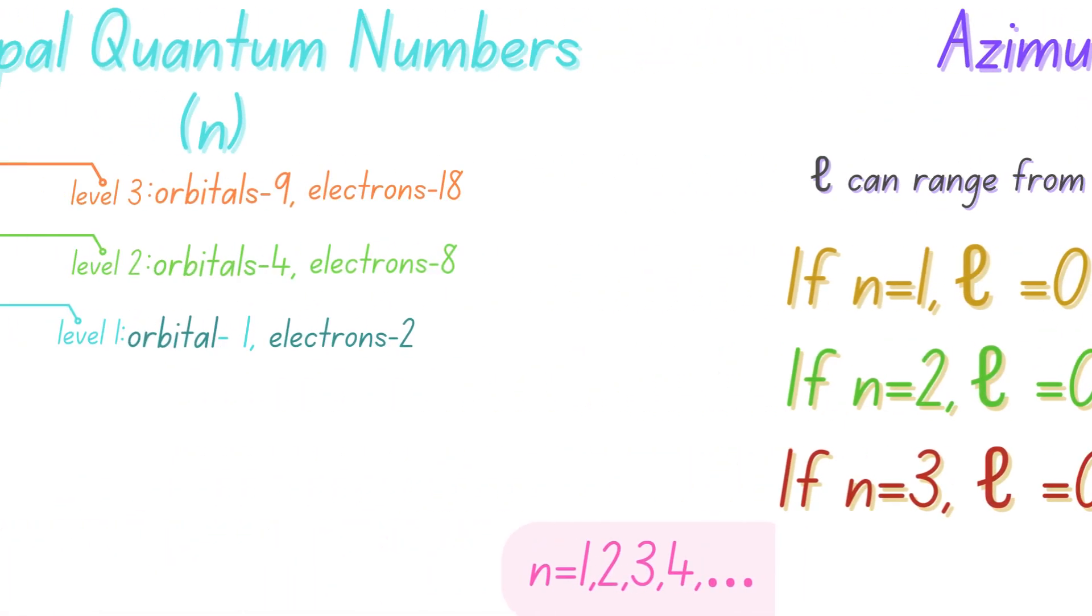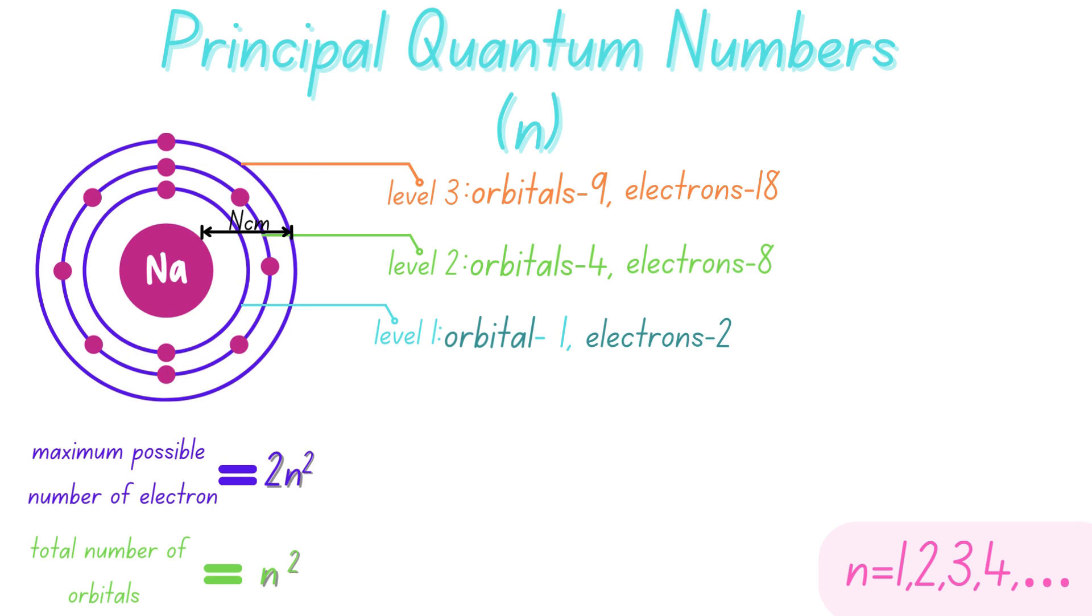For our previous example in the previous quantum number, the orbitals will then be, for one orbital, it will be one s. Four orbitals will have two s and two p, and for nine orbitals, we'll have three s, three p, and three d.